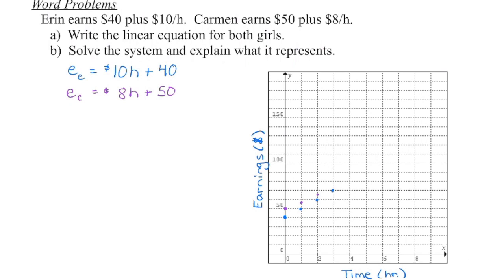All right, so I know Erin. She starts with $40, and then she's earning $10 for every hour. So after two hours, $20. After three hours, $30, plus that original $40. Carmen starts with $50, but then she gets $8 an hour. So after two hours, $16. After three hours, $24, and so on.